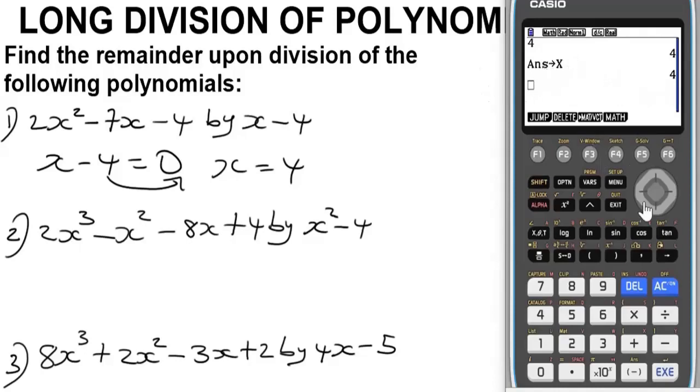Let's delete everything. Now to find the remainder, all you have to do is input this polynomial exactly as it appears here. So it's going to be 2x² - 7x - 4. Let's press EXE. We get a result of value zero. That means the remainder of this polynomial is zero.